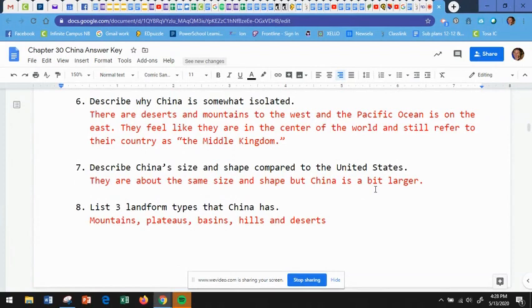Then our questions for this section. Number six, describe why China is somewhat isolated. Well, there are deserts and mountains to the west, and the Pacific Ocean is on the east. So they feel like they're kind of in the center of the world because they're set apart from everybody else. And oftentimes, they still refer to their country as the Middle Kingdom, as they did many years ago. Number seven, describe China's size and shape compared to the United States. Well, they're about the same size and shape, but China is actually a little bit larger size-wise.